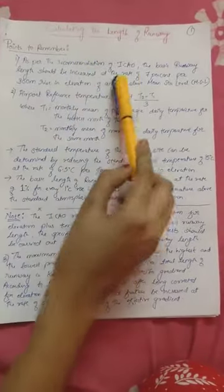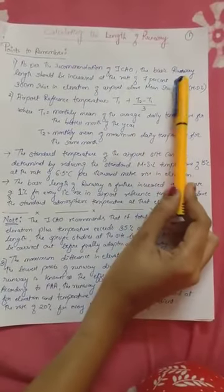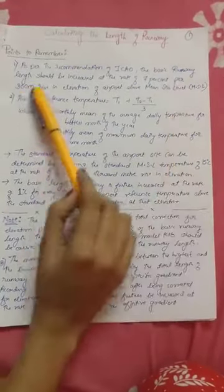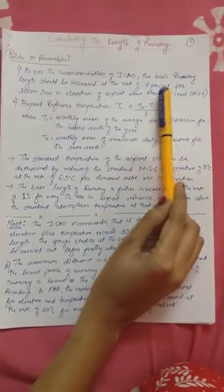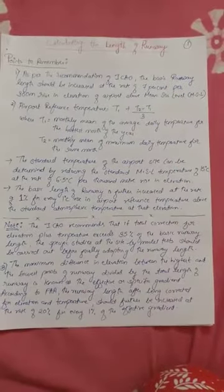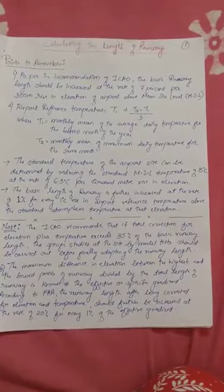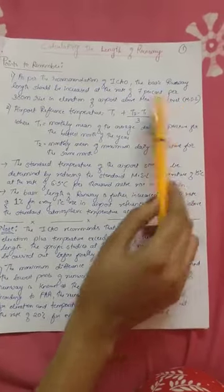As per the recommendation of the International Civil Aviation Organization, the basic runway length should be increased at the rate of 7% per 300 meter rise in elevation of the airport above mean sea level.